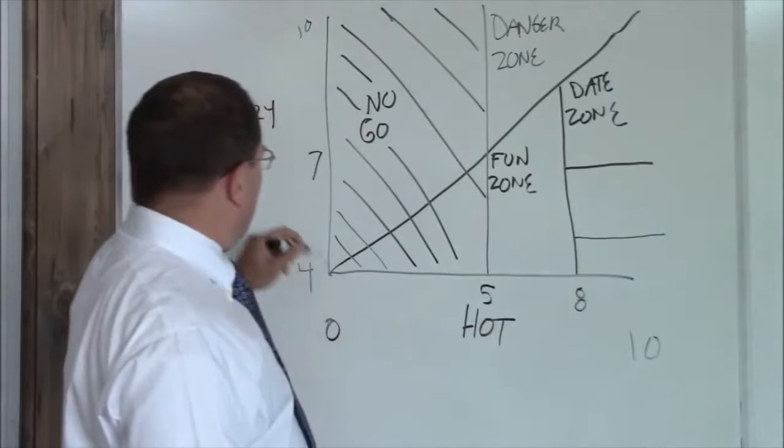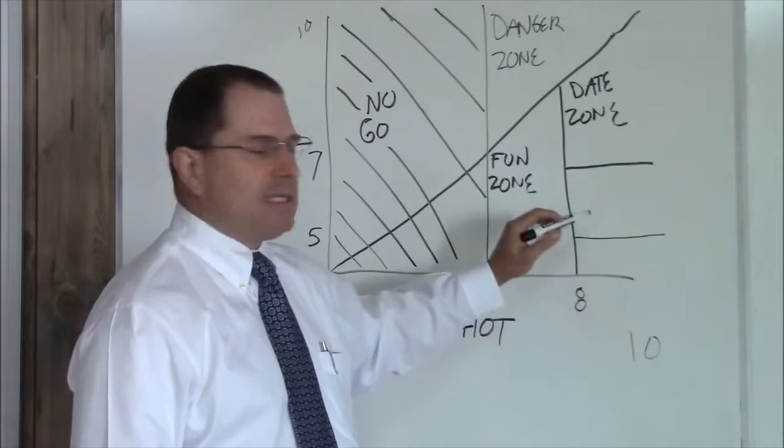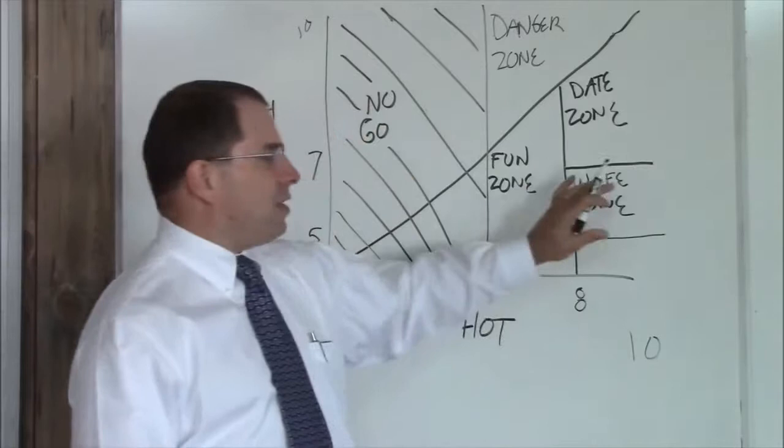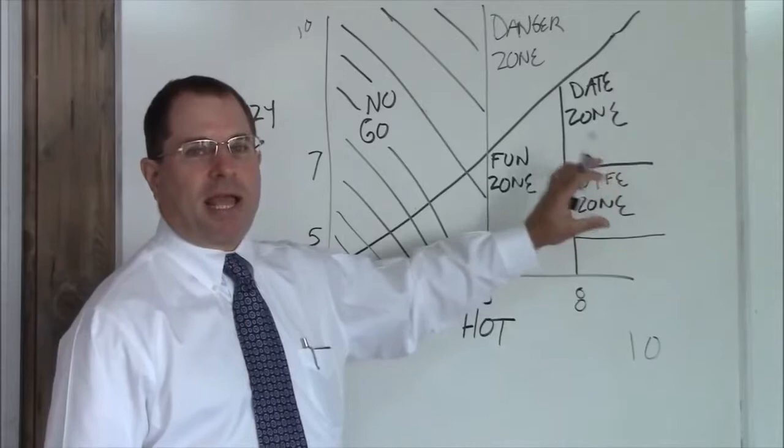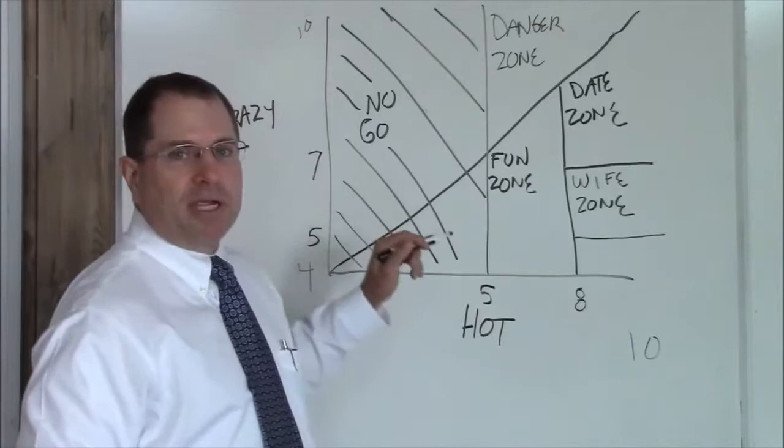Now, above an eight hot and between about a seven and a five crazy, this is your wife zone. When you meet this girl, you should consider a long-term relationship. This zone is not scaled to size. This is a representation and not an actual, this is not a pie chart showing you how many of these people are out there. This is simply a representation of what you're after. You want to be five to seven crazy above an eight hot. That's your wife zone.